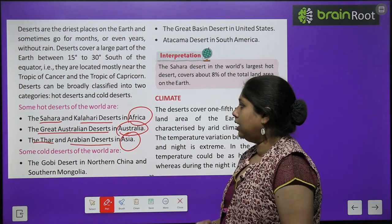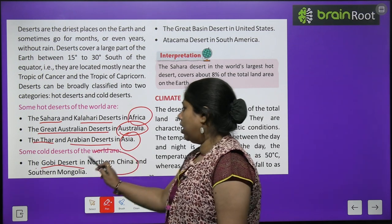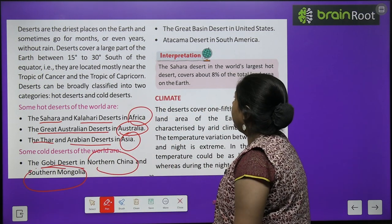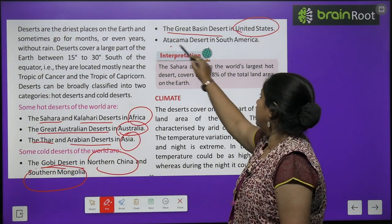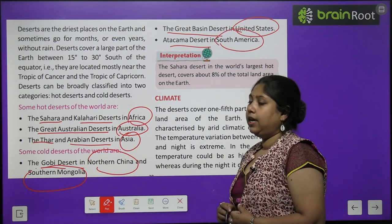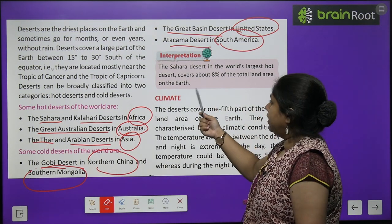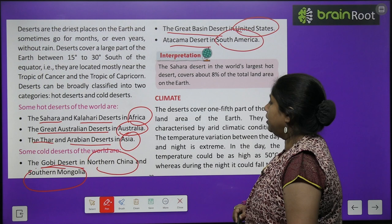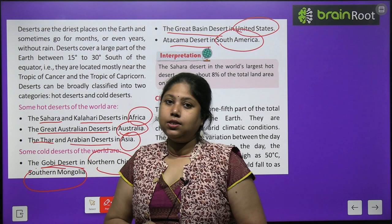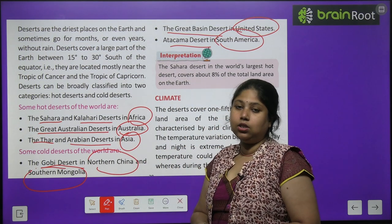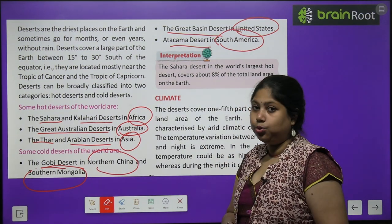Some cold deserts of the world are: the Gobi desert in northern China and southern Mongolia, the Great Basin desert in the United States, and the Atacama desert in South America. The Sahara desert is the world's largest hot desert, covering about 8% of the total land area on the earth.